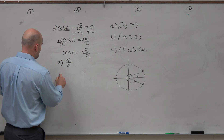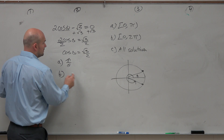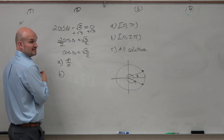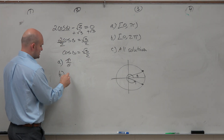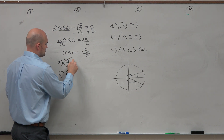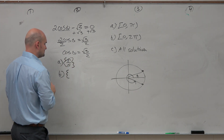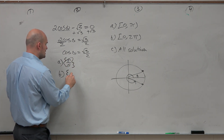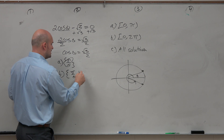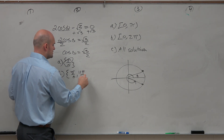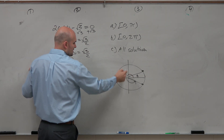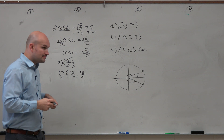For part b, that is the interval from 0 to 2π, which is basically everything on the unit circle. So I'll use set notation here. This would be π over 6 and 11π over 6 — that angle is π over 6 and that angle is 11π over 6.